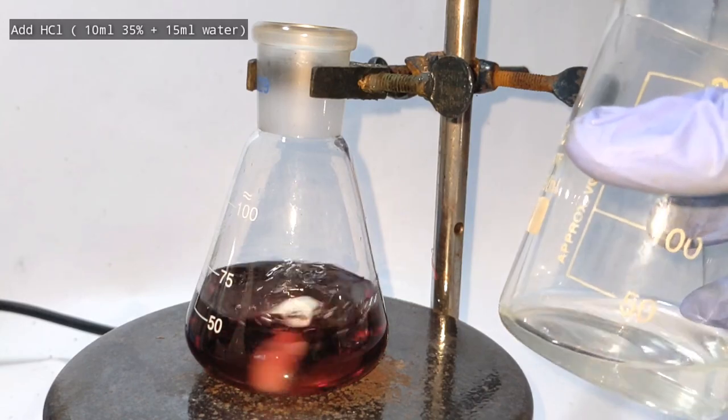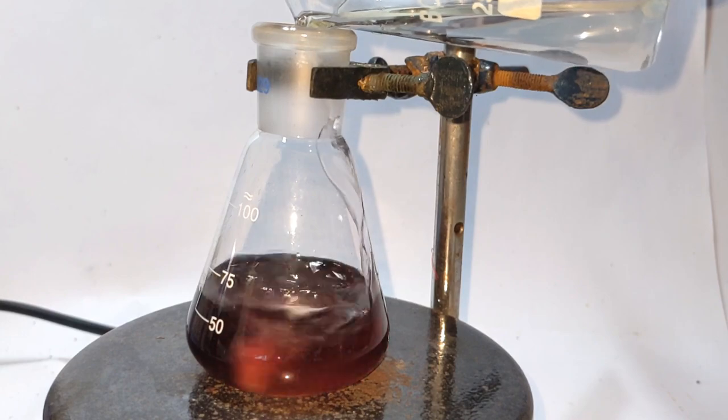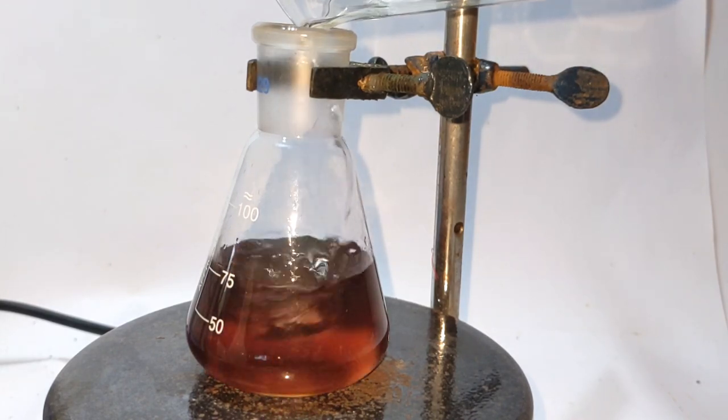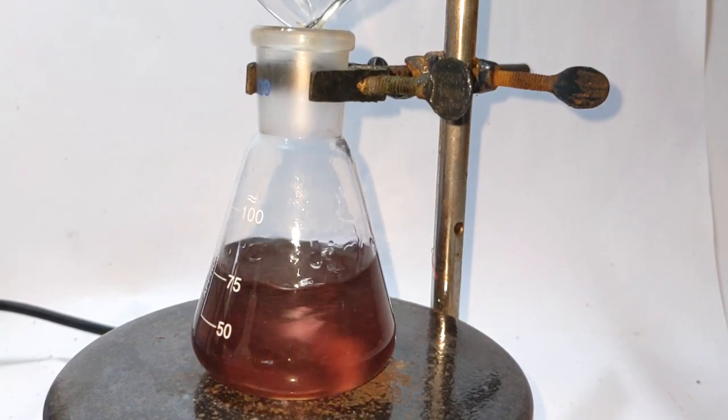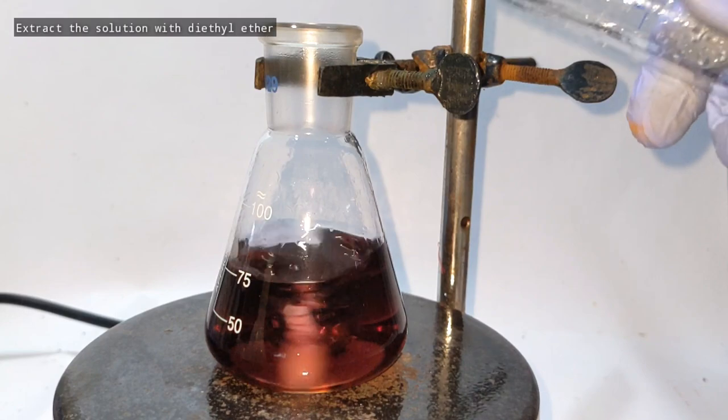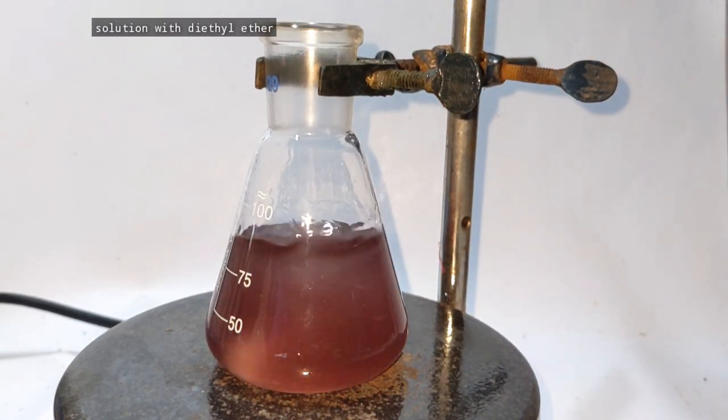The next day we add a hydrochloric acid solution containing 10 ml of 35% HCl and 15 ml of distilled water. Mix it well until the base dissolves. Now we extract the solution with two 15 ml portions of diethyl ether.